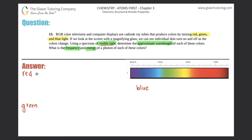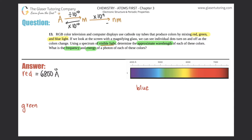So we have red as 6800 angstroms. Remember: if your teacher doesn't give you the conversion, you should know how to convert from angstroms to meters, and then from meters to nanometers. To go from angstroms to meters, divide by 10 to the 10th. To go back, multiply by 10 to the 10th. Meters to nanometers, multiply by 10 to the 9th; back to meters, divide by 10 to the 9th. Know this progression.